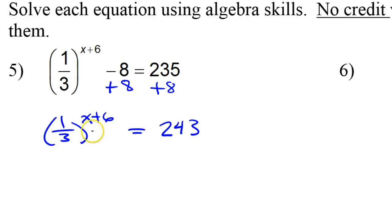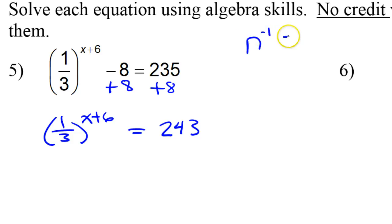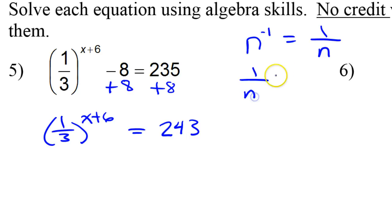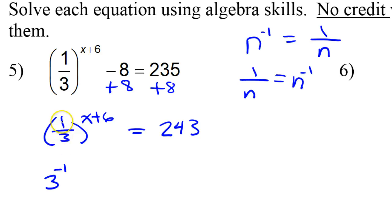Now I need to get like bases somehow. I see the 3 here, but it's like 1 third. Here's what you have to understand. Remember that n to the negative 1 power is 1 over n? Well, it goes the other way around. If I see 1 over n, I know that's going to be n to the negative 1 power. So if I see 1 over 3, I know that's going to be 3 to the negative 1 power. Here I've just replaced 1 third with 3 to the negative 1 power.